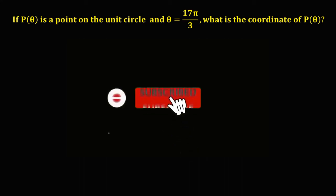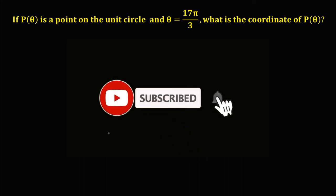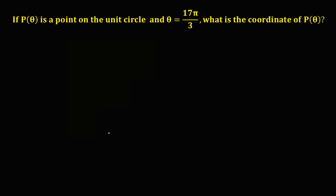Welcome to MathStorya. Today's topic is finding the coordinates of the unit circle. We are given that P(θ) is a point on the unit circle and θ is equal to 17π/3. So, what is the coordinate of P(θ)?